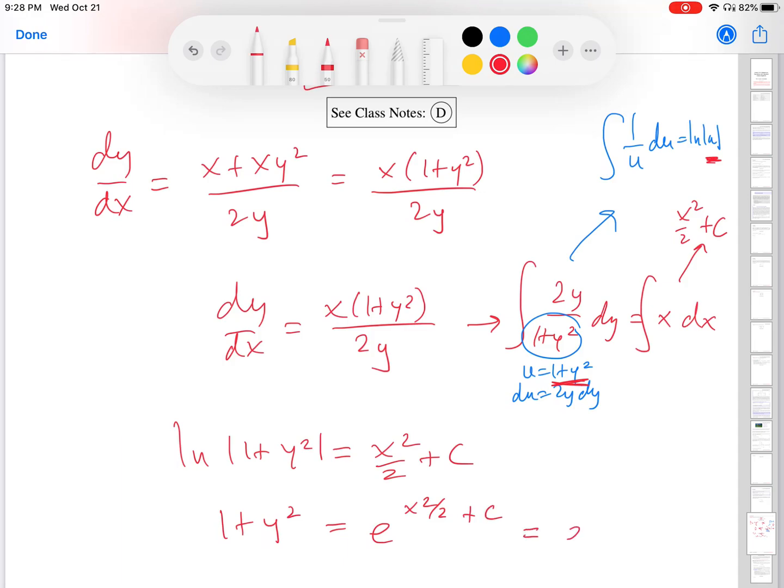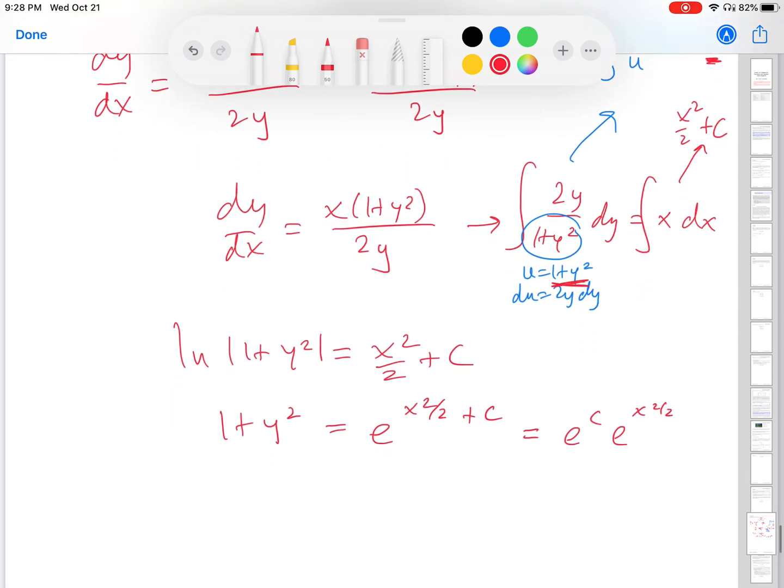And I'm going to call e to the c k, constant k. So my final equation for the orbits is k e to the x squared over 2. Again, this is an implicit form for the orbits.